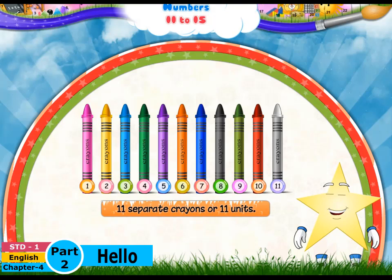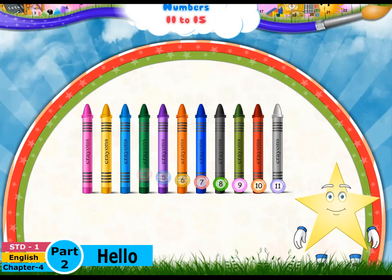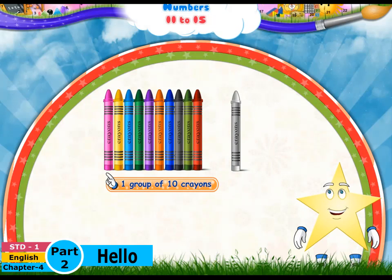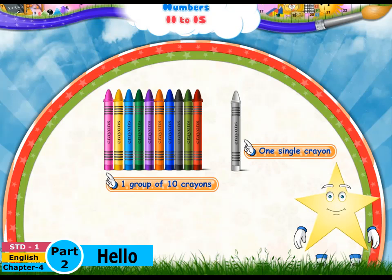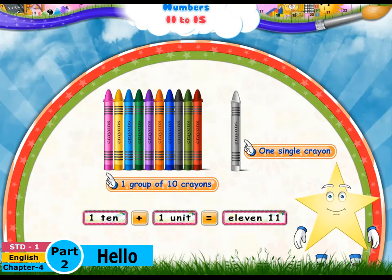Eleven separate crayons — eleven units. But study, eleven crayons is also one group of ten crayons and one single crayon: one ten and one one, or one unit. The number E-L-E-V-E-N, eleven.